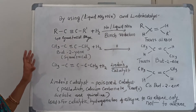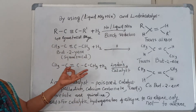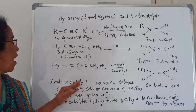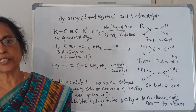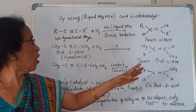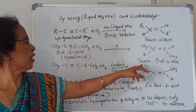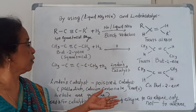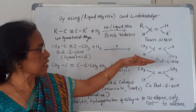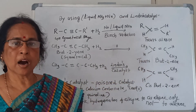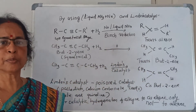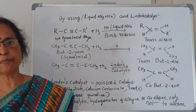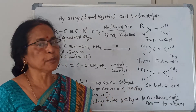The other case is Lindlar's catalyst. Lindlar was a scientist who proved one catalyst, and that is called Lindlar's catalyst. If you treat with Lindlar's catalyst, then you will get cis-but-2-ene. What does cis mean? Cis means both same alkyl groups are in the same plane — here the same CH₃ groups are on the upper part and the same hydrogen on the lower part. So this is called cis-but-2-ene.